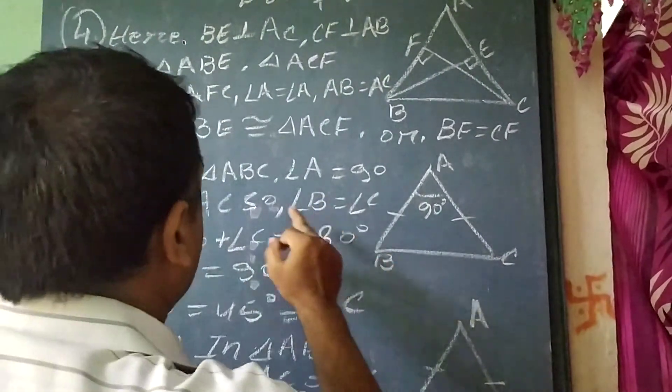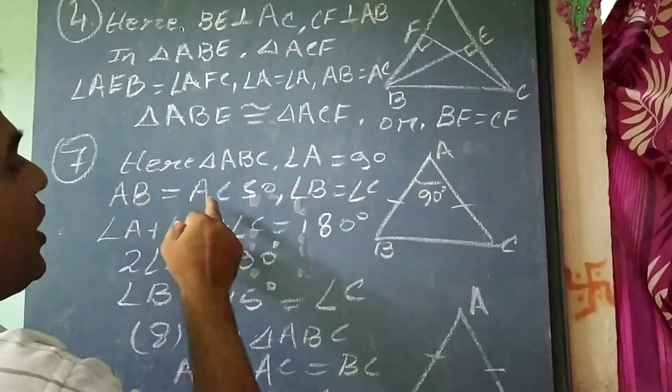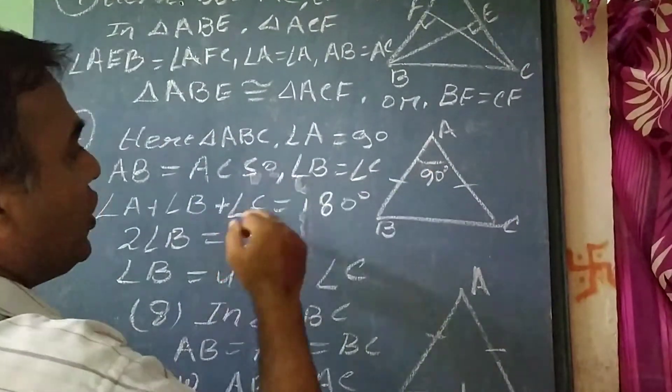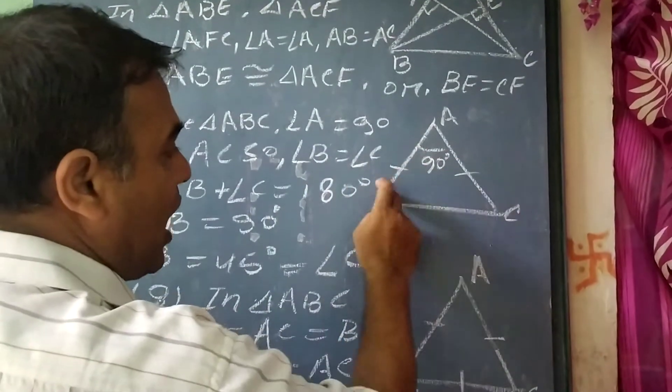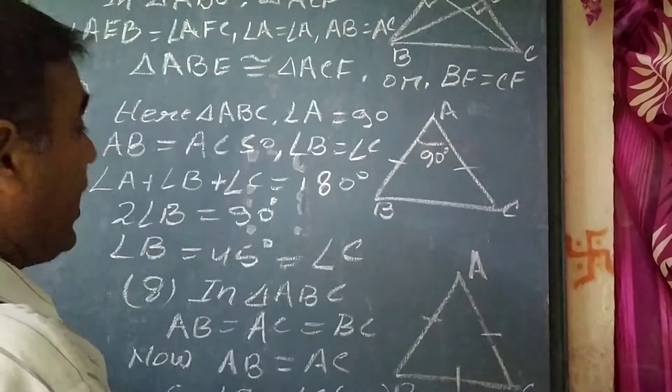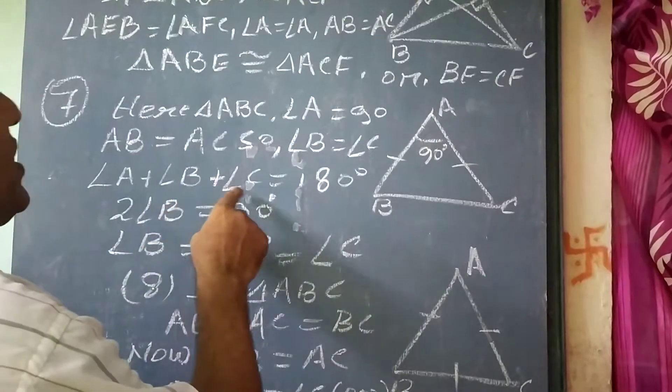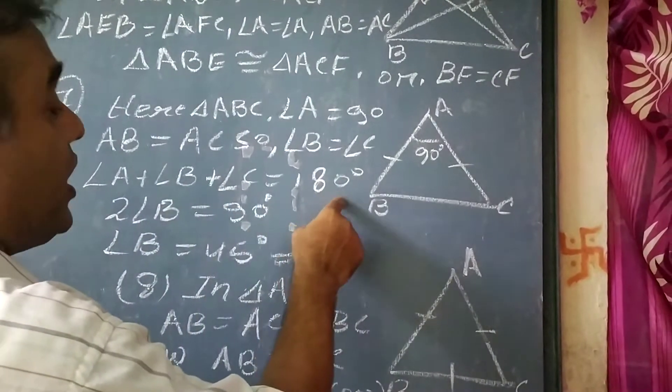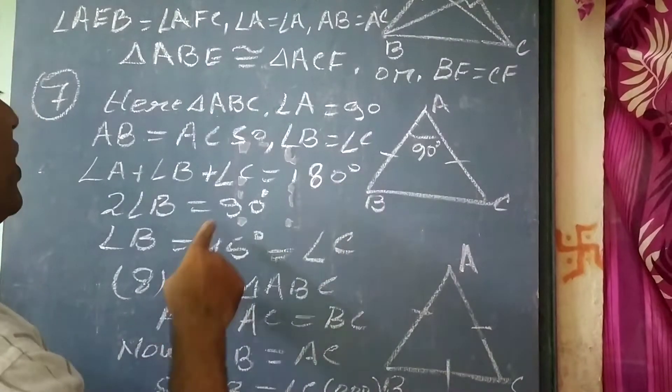Here given that in triangle ABC, angle A equal to 90 degrees, AB equal to AC as it is given. So we can write angle B equal to angle C, that is the opposite angles of equal sides. So we can write angle A plus angle B plus angle C equal to 180 degrees. We have subtracted 90 degrees from 180 degrees, we get 90 degrees.